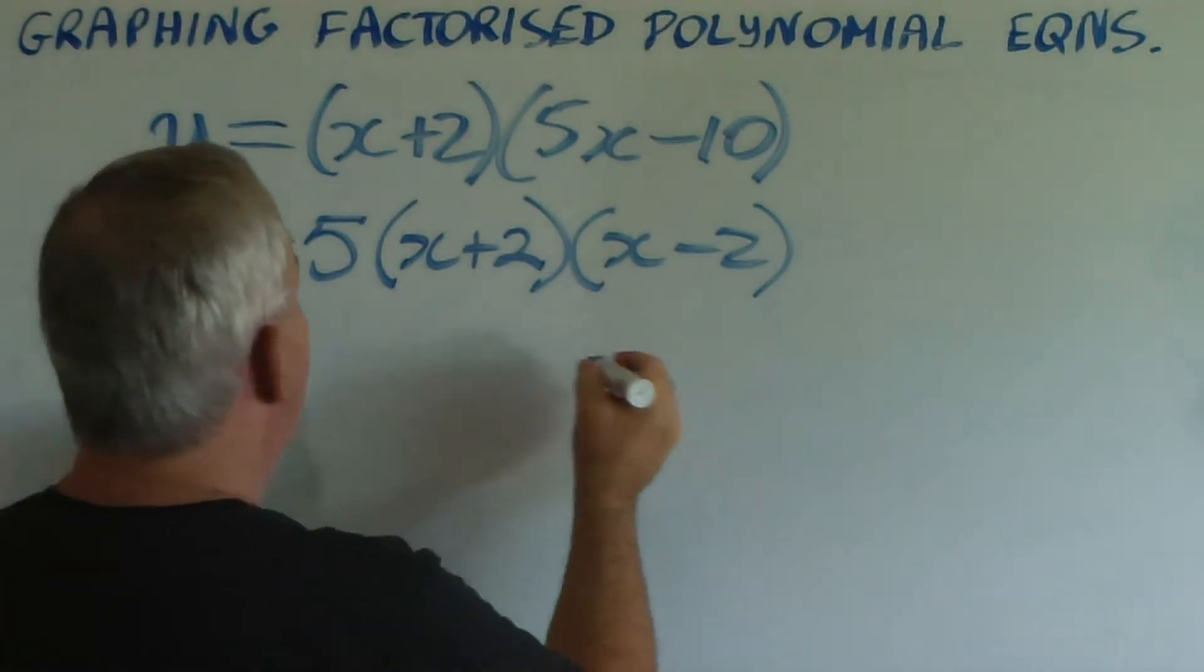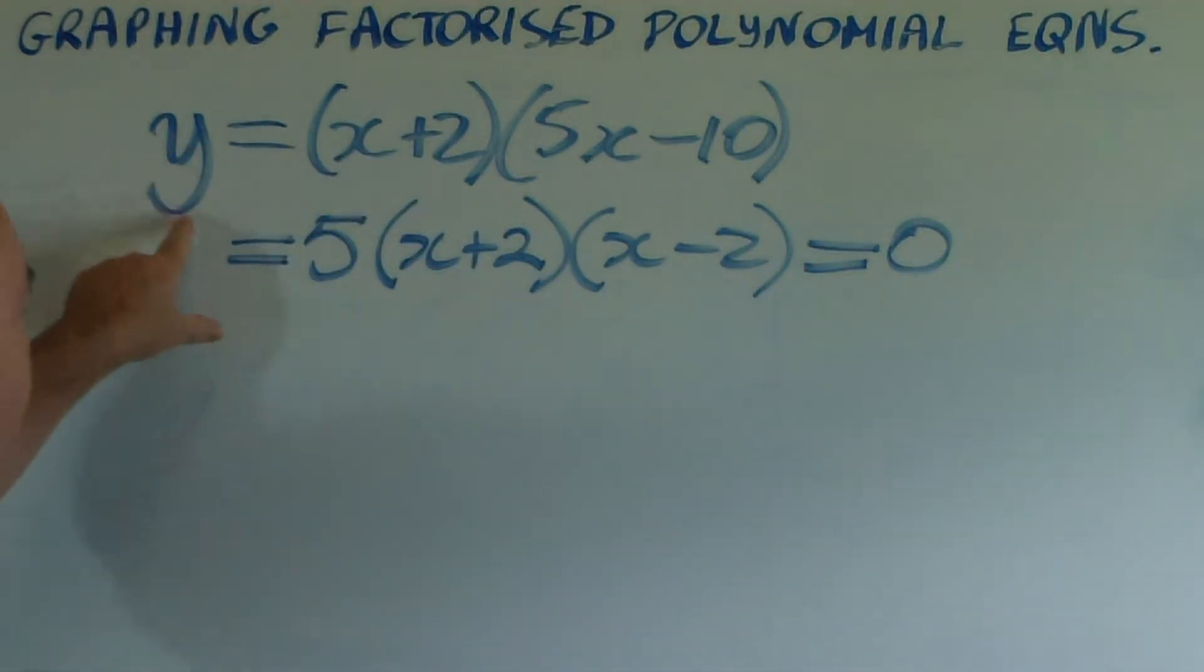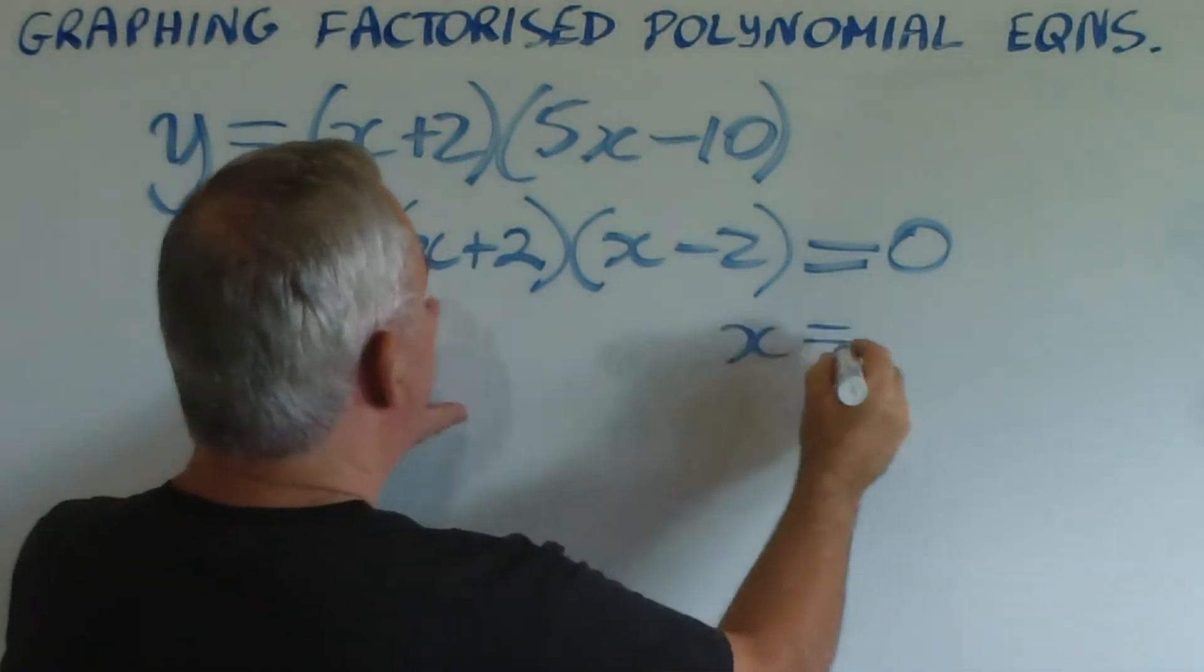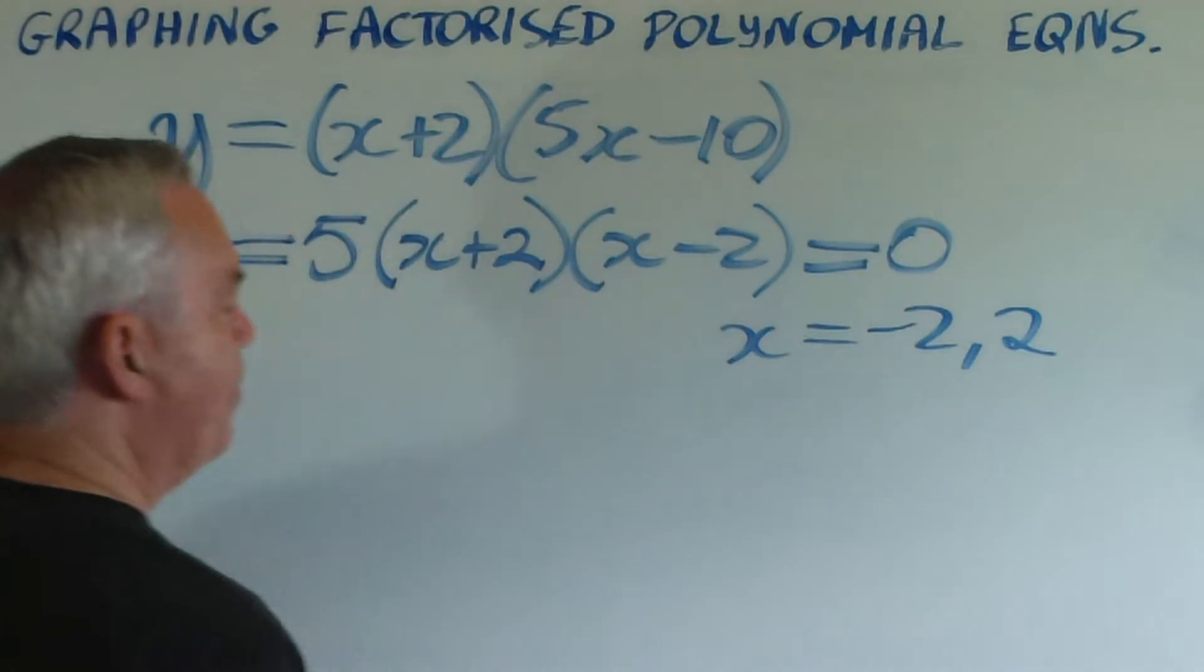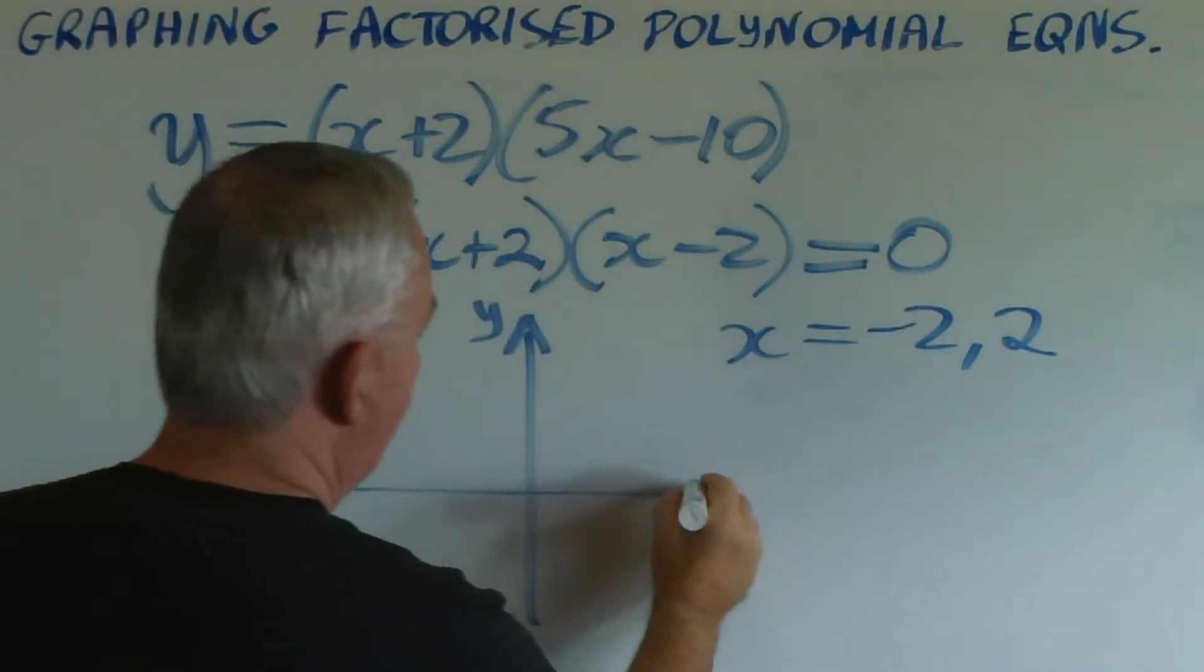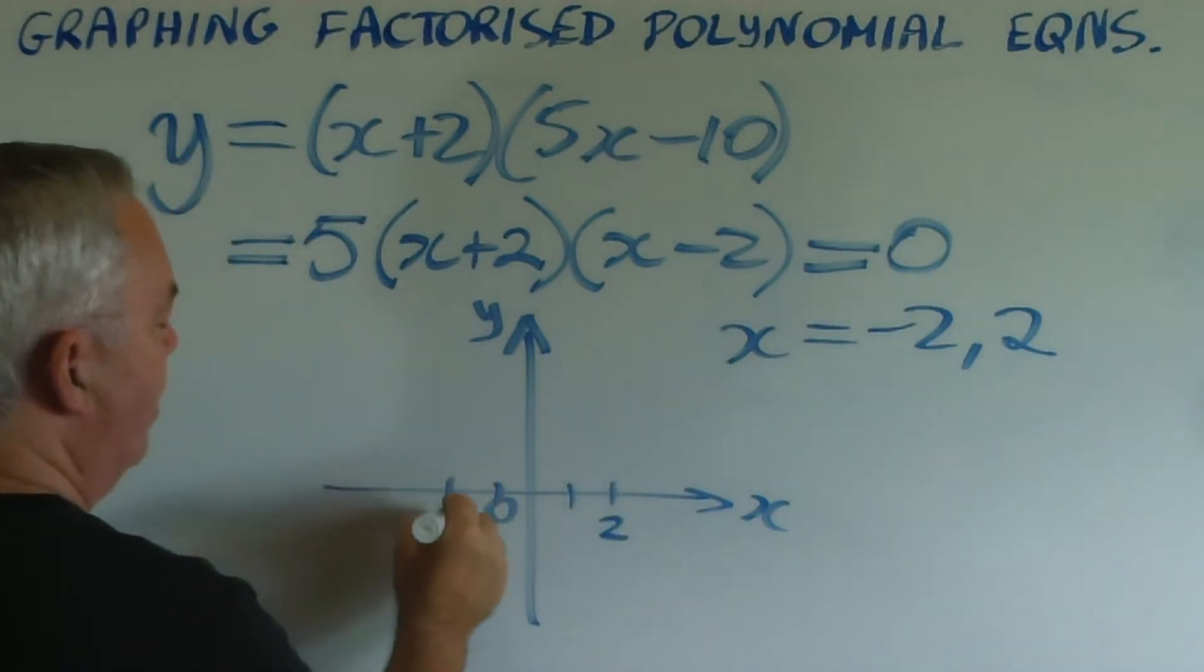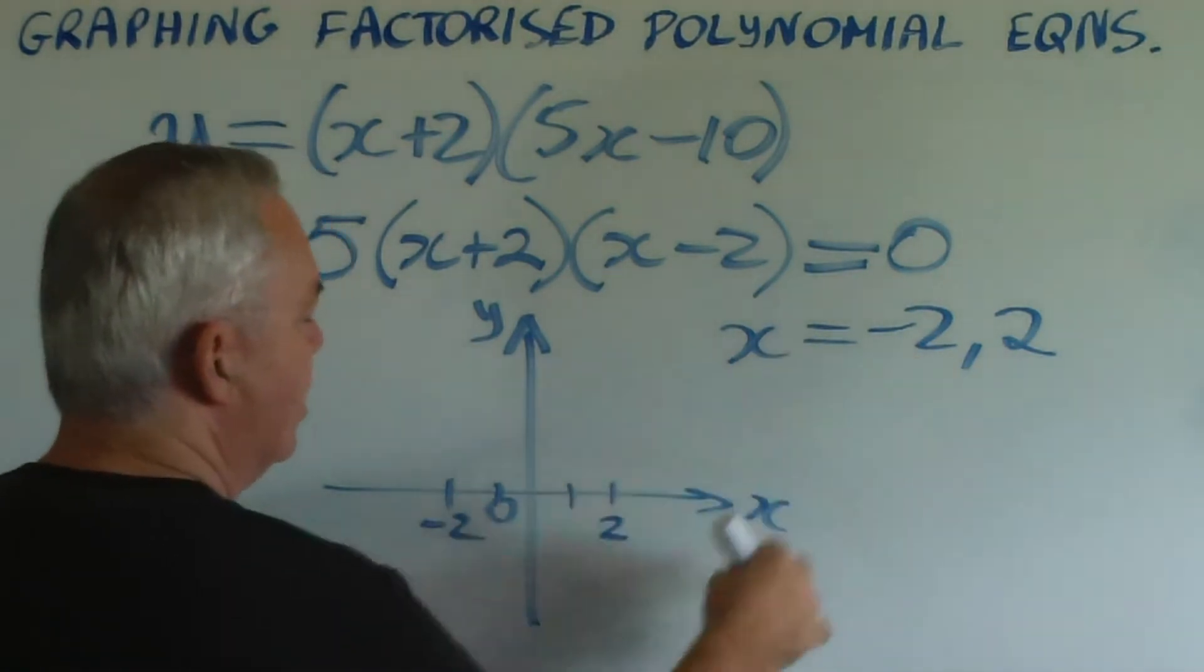We can see again, if we want to find the roots of this quadratic, setting y equal to zero, that x would be minus two or plus two. And if I was to graph this, there's a root at plus two and a root at minus two, as we've discovered.